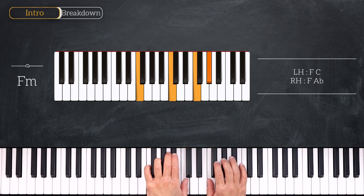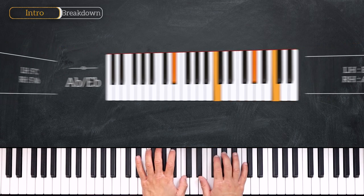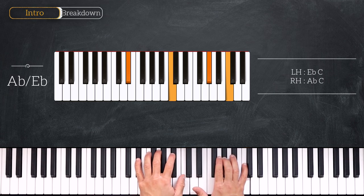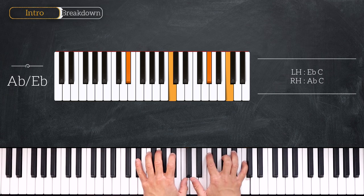From there we'll come back to the first degree playing this Ab over Eb chord. We have Eb, C on the left hand and Ab, C on the right. Very nice!